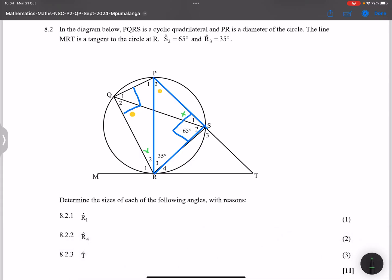Now, ladies and gents, they say to us, determine the sizes of each of the following angles with reasons. So firstly, we're looking for R1. So notice there, we've got R1 angle subtended, or rather angle between a tangent and a chord, equals to the angle on the opposite side of that chord. So tan chord theorem.